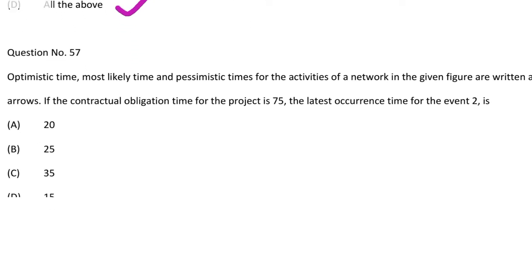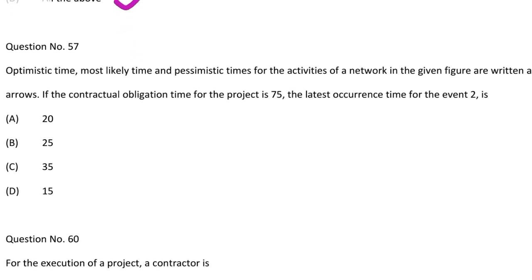Next question: optimistic, most likely time, and pessimistic for the activities of the network in the given figure are written above the arrows. If the contractual obligation time for the project is 75, the latest occurrence time for event 2 is — option A 20, option B 25, option C 35, option D 15. The correct answer is option B, 25.